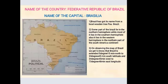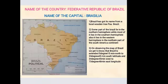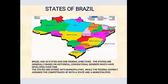We then studied about Brazil — the Federative Republic of Brazil. Its capital is Brasília. Brazil got its name from the local wooden tree Pau Brazil. The southern part of Brazil lies in the northern hemisphere while most of it lies in the southern hemisphere, and it lies in the western hemisphere in the northern part of the South American continent. Brazil extends from 5°15'N to 33°45'S latitude and 34°45'W to 73°48'W longitude. Brazil has 26 states and one federal district, with states generally based on historical and conventional borders.